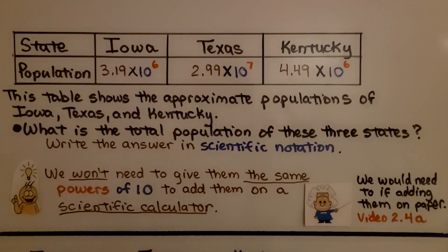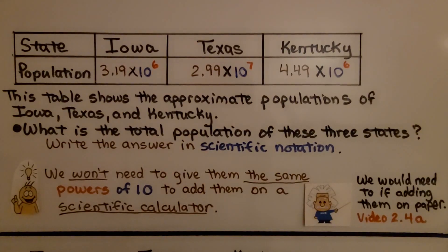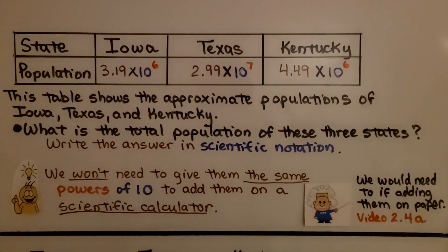This table shows the approximate populations of Iowa, Texas, and Kentucky. What is the total population of these three states? Write the answer in scientific notation.